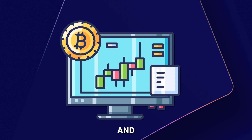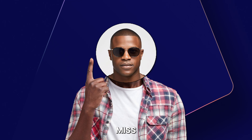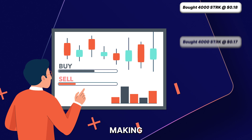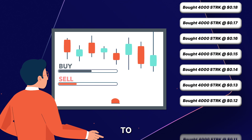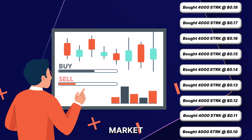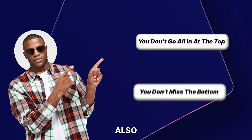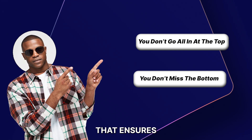Crypto is very volatile and trying to time the bottom can be really difficult. But one strategy you can use to ensure you don't miss the move to the upside is DCA — dollar cost averaging. It's a strategy of making regular fixed investments over time into an asset to reduce the impact of market volatility. That way, you don't end up buying the top and you also don't miss the bottom. You get an average entry that ensures you're in.